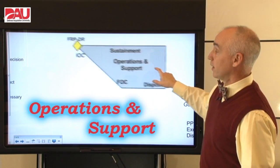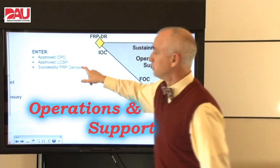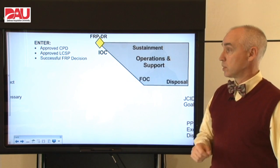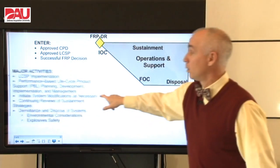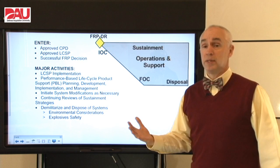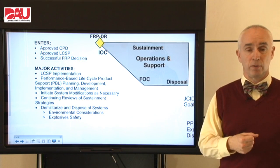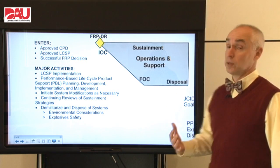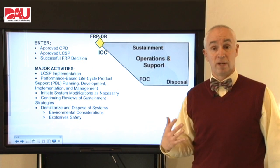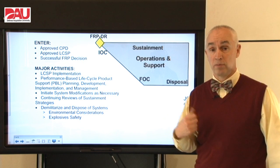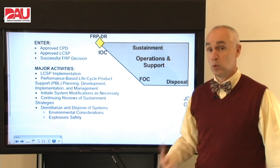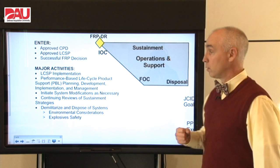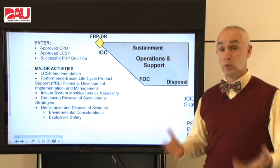Operations and Support is our final, longest, and most expensive phase. To get into it, we've got to have an approved Capability Production Document, an approved Life Cycle Sustainment Plan, and a successful full rate production decision. Major activities include implementing that sustainment plan through a philosophy of performance-based life cycle support, or PBL, where we incentivize our support organizations within the government and our contractors to provide better performance for the warfighter — meaning better reliability, quicker turnaround times, and quicker repairs — so that we have more uptime and less downtime for our systems, and do it affordably.